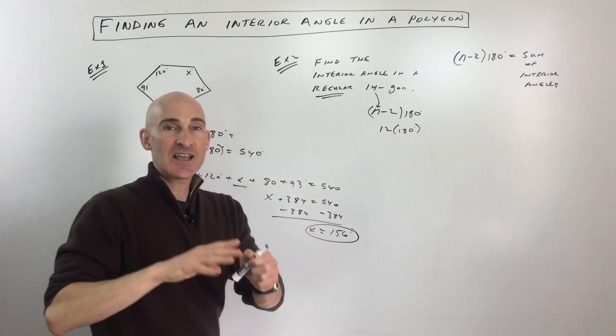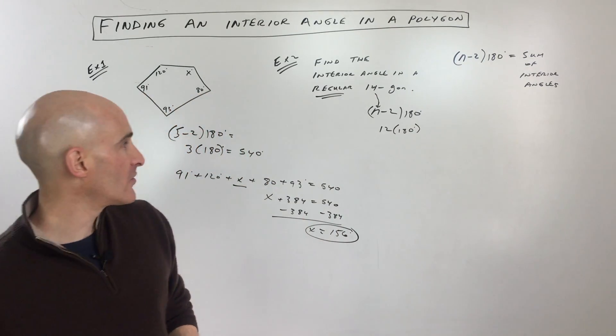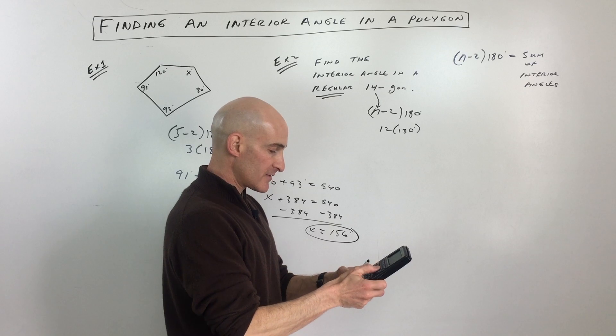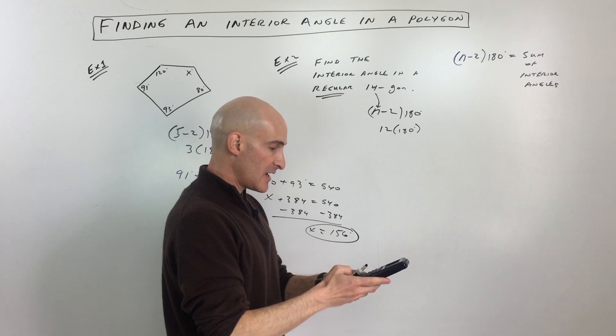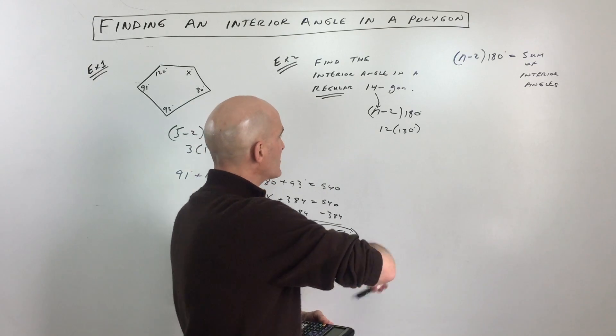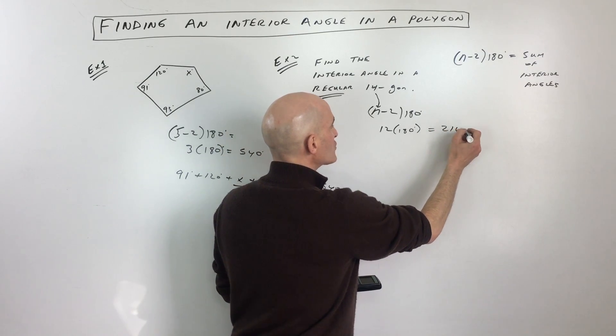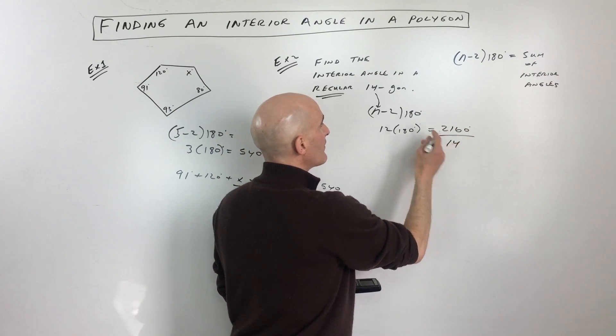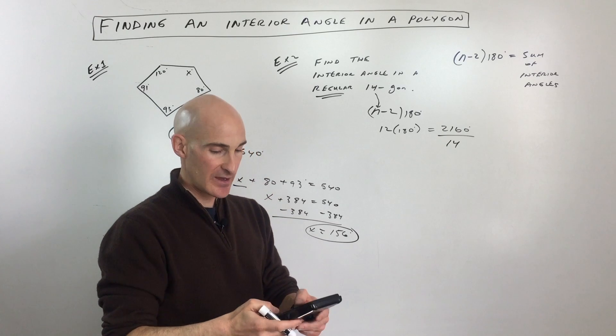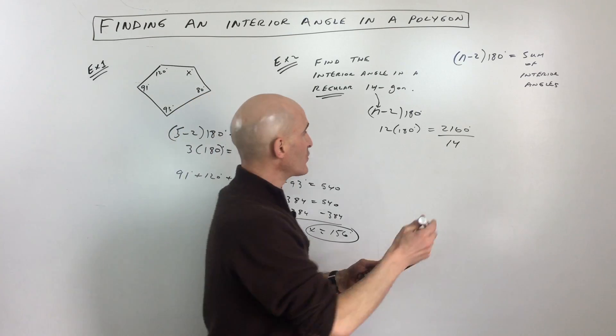That's going to give us the sum of all the interior angles. So if we do that, we'll go to the calculator here. 12 times 180. That gives us 2,160, but we just want to find the measure of one angle, so we're going to divide by 14, since there's 14 of them. So that was pretty easy.